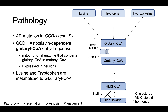To give you a sense for what this pathway is important in, crotonyl-CoA goes on to be converted to HMG-CoA, which is a substance that is inhibited by statins, which inhibit HMG-CoA reductase. That's an enzyme that goes on to help produce derivatives that are really important for cholesterol synthesis, vitamin K synthesis, as well as the synthesis of all steroid hormones in the body.